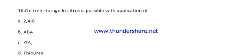Question number sixteen: On-tree storage in citrus is possible with the application of which growth regulator? The options are: 2,4-D, CKC, GA3, or thiourea. The right answer is GA3 — that is Gibberellic acid.